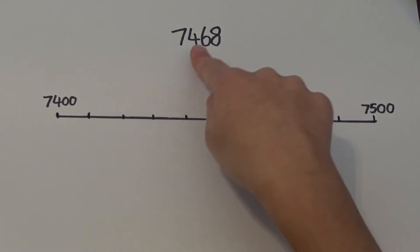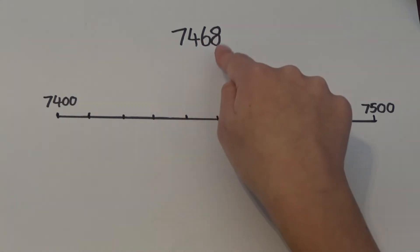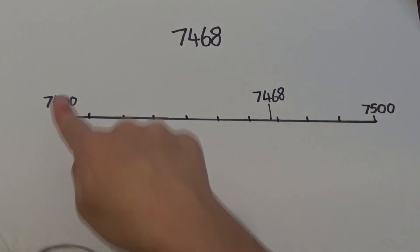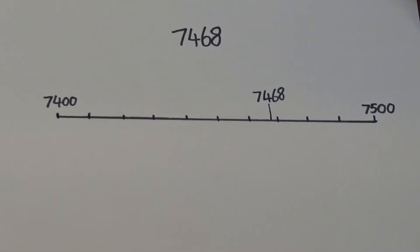This time I'm going to round seven thousand four hundred and sixty-eight to the nearest hundred. I need to look at the hundreds, tens, and ones column to help me decide which multiples of one hundred it falls between. If I look at the number four hundred and sixty-eight, it falls between four hundred and five hundred, so I've written seven thousand four hundred at one end and seven thousand five hundred at the other.